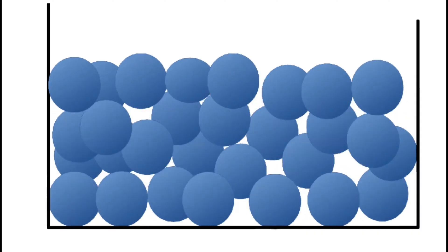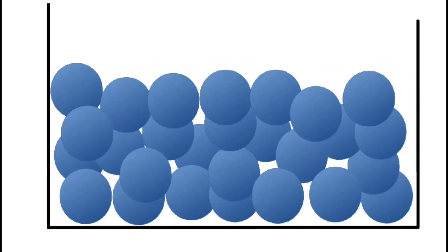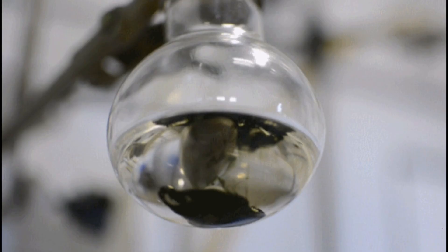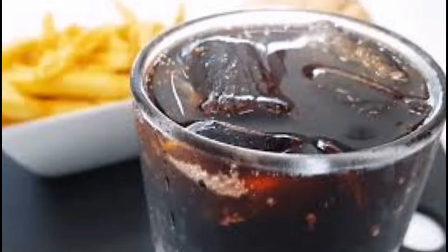The second state of matter is liquid. A liquid also takes up a certain amount of space; however, it does not keep its shape. A liquid takes the shape of the thing that holds it — a liquid's shape depends on the container that it's in, like a cup or metal tin.